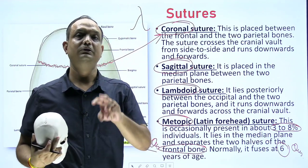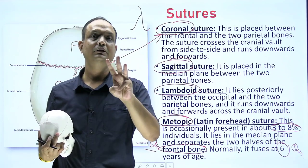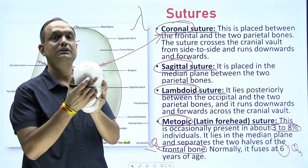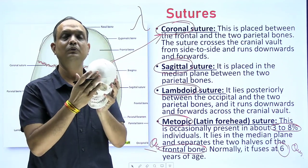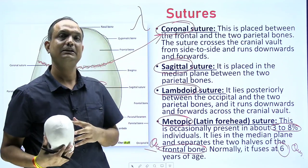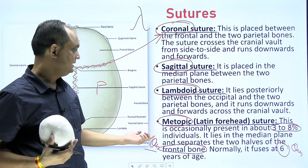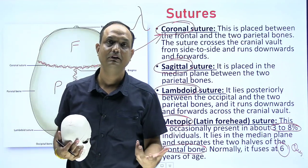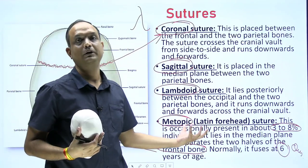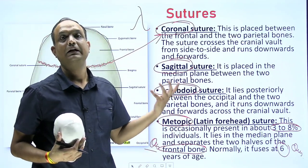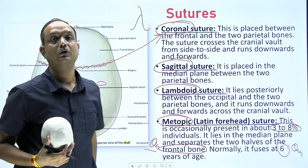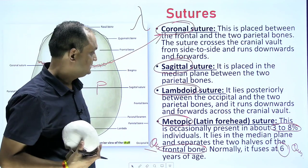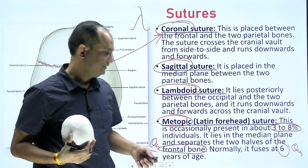So the metopic suture has three important questions. First: it is a feature of which bone? Answer: frontal bone. Second: it is present in how many percentage? Answer: three to eight percent. Third: at what age does it ossify? Answer: six years of age.